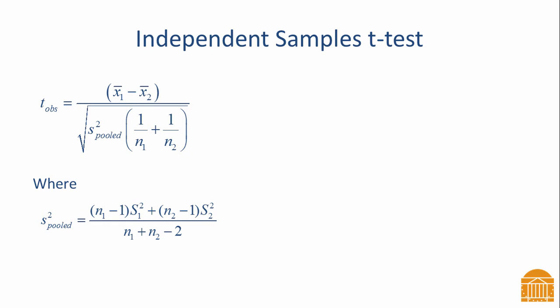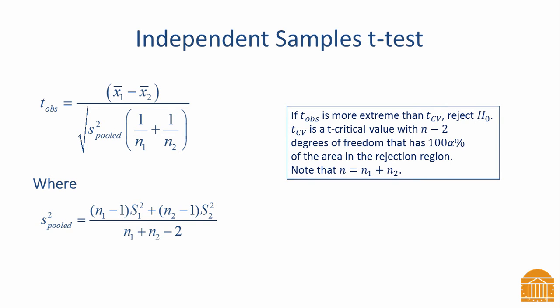The numerator is divided by the standard error, which is computed differently than in the one-sample t-test because we must account for the variance within each group. The symbol s-squared sub pooled is a pooled within-group variance, computed by adding the sum of squares for each group and dividing by the degrees of freedom — in this case, the total sample size minus 2. We compare the observed t-statistic to a critical value from the t-distribution with n minus 2 degrees of freedom that has 100 alpha percent of the area in the rejection region. If the test statistic is more extreme than the critical value in the direction of the alternative, we reject the null hypothesis.